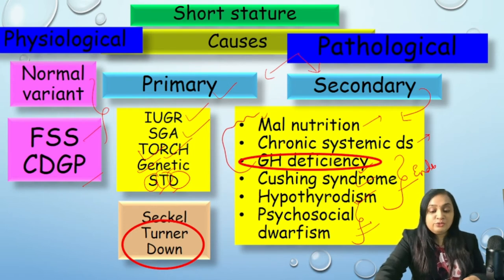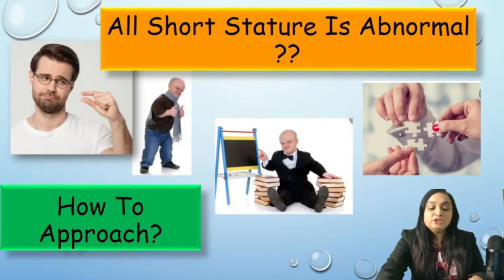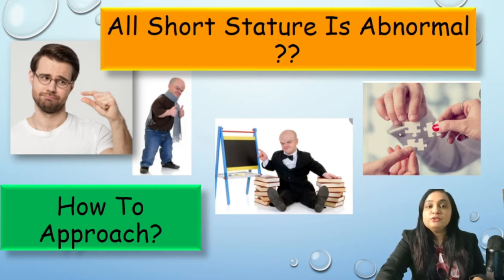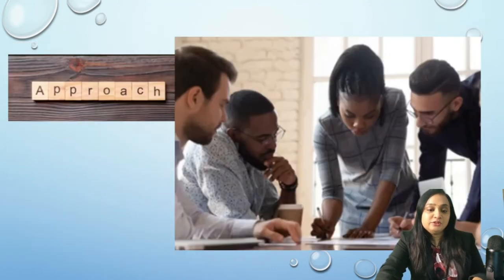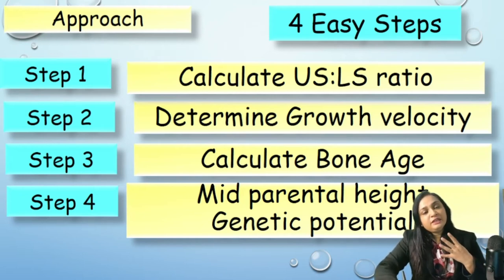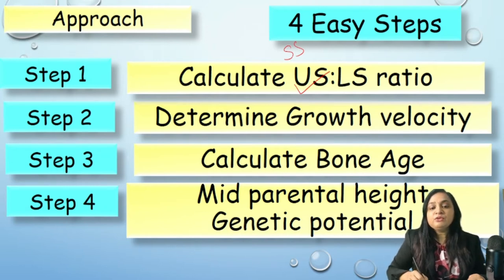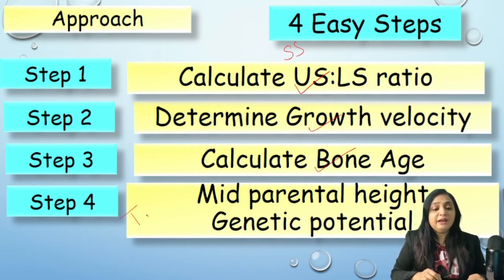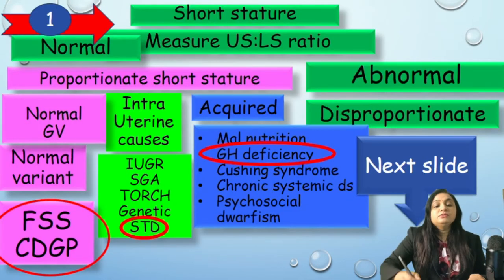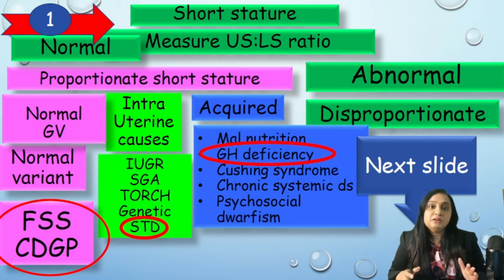After discussing the etiological classification, we are going to learn how to approach short stature in four steps. First, if we confirm the diagnosis of short stature, we measure the upper segment to lower segment ratio. Then we determine the growth velocity of the child. Then bone age. And finally, target height or mean parental height.